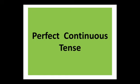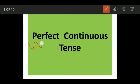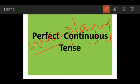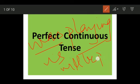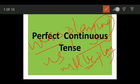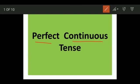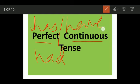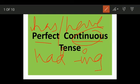After studying the simple form of tenses, we studied the continuous form, in which we use the ing form of the verb. For example, past continuous: she was playing; present continuous: she is playing; future continuous: she will be playing. Here 'be' is the helping verb. Now when talking about perfect continuous tense, we combine perfect (has/have/had) with the continuous ing form of the verb.